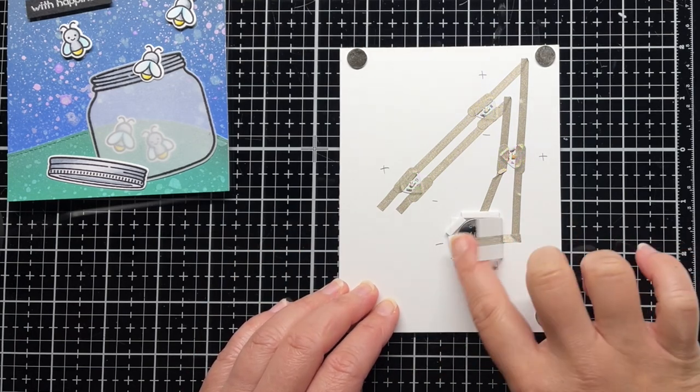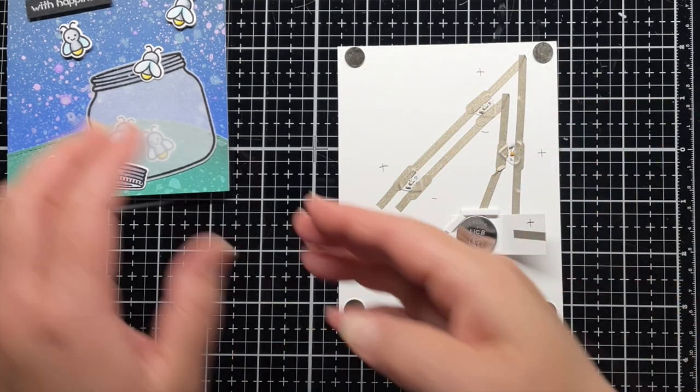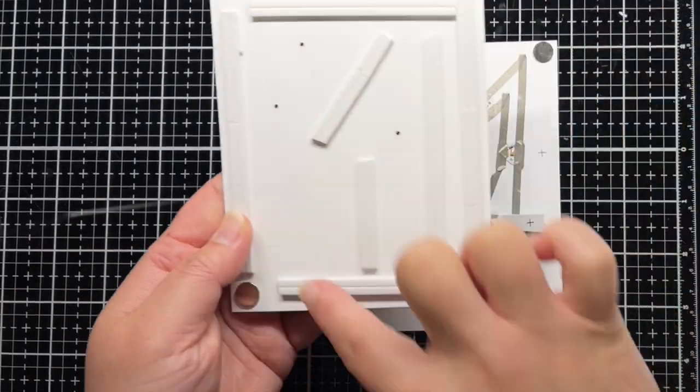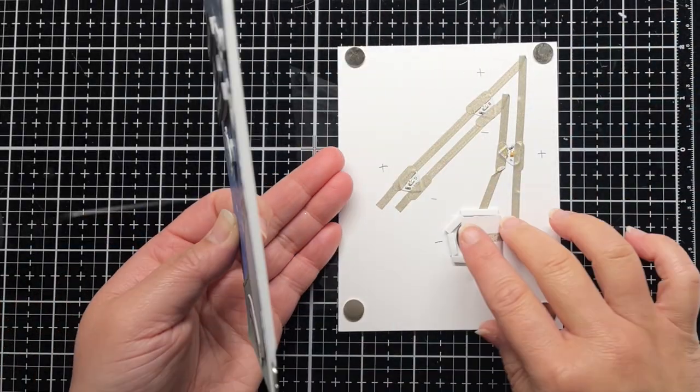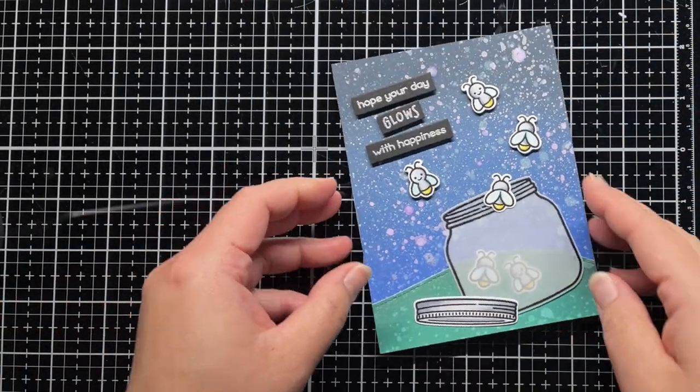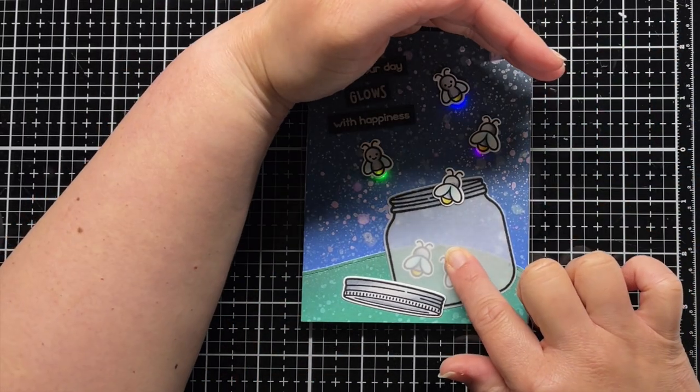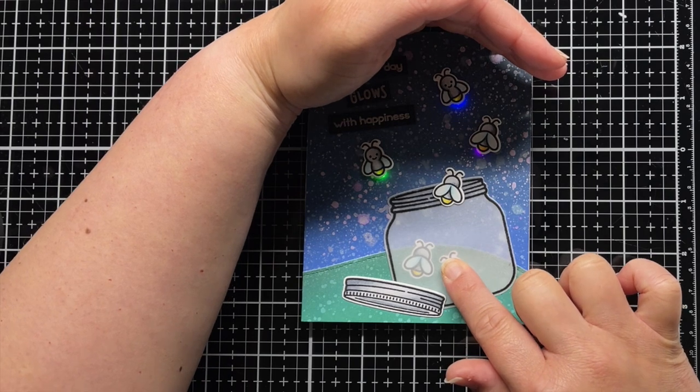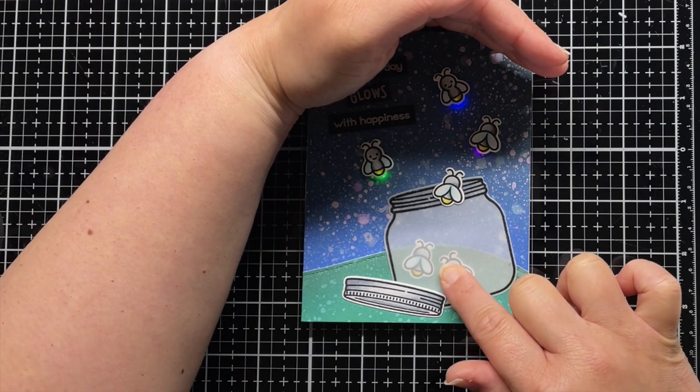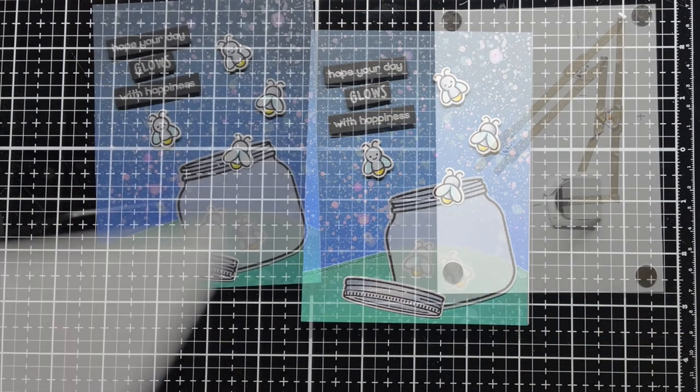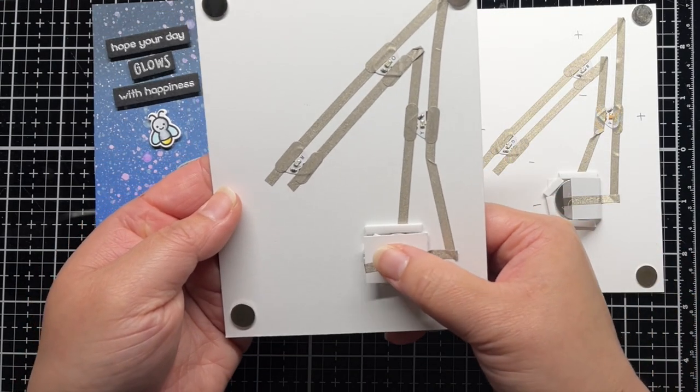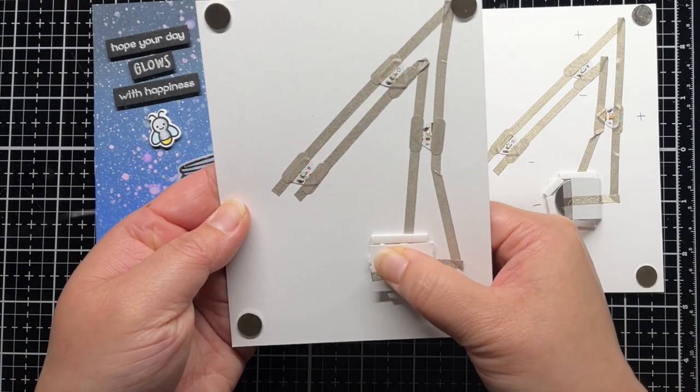As I've shown before, I add my Firefly panel using magnets, because this is a template I'll be using over and over again. If you were adhering this to a card base, you'd adhere the circuit panel to your card base with a layer of foam mounting tape. And here's a look at the card with those colorful fireflies.